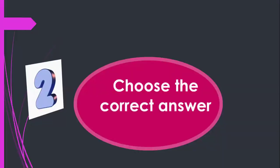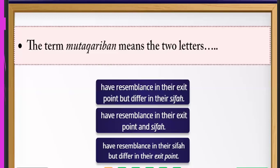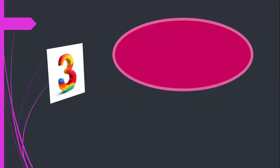Let's go to the second section: choose the correct answer. Number one: the term متقاربين means the two letters — which option is correct? The second option is correct.